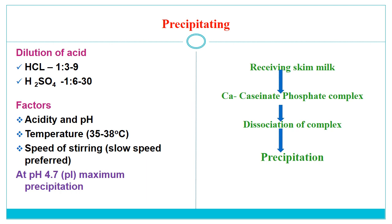In the preparation of acid casein, after receiving milk, there is dissociation of the calcium caseinate phosphate complex and precipitation by addition of acid. The acids used are diluted hydrochloric acid (1:2 to 1:9) or sulfuric acid (1:2 to 1:6 to 1:30). Important factors for precipitation are: pH of the solution, temperature (around 35–38°C), and speed of stirring — slow speed is better. The precipitation is ideal at pH 4.7, which is very near to the isoelectric pH of casein, where maximum precipitation occurs.